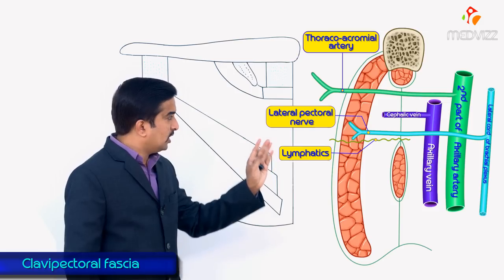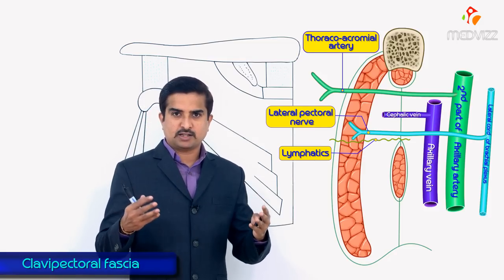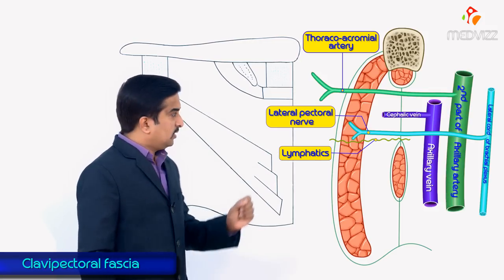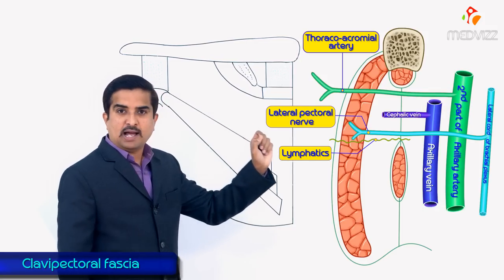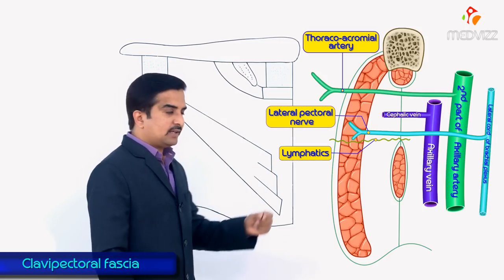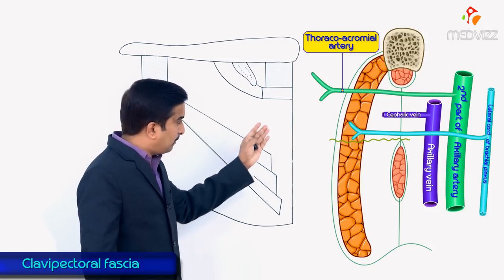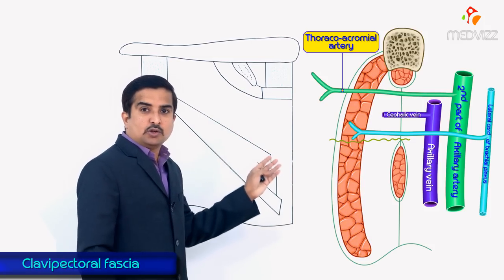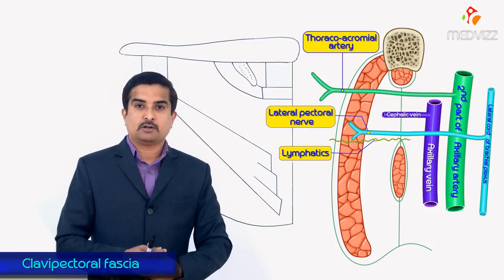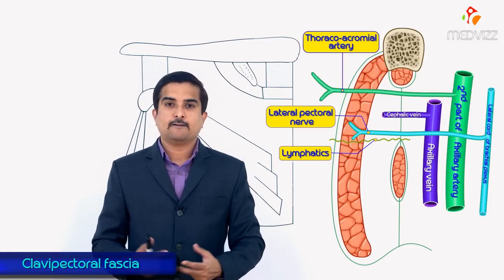To summarize, the structures piercing the clavipectoral fascia are: the thoracoacromial artery (branch of the second part of the axillary artery), the cephalic vein (drains into the axillary vein), the lateral pectoral nerve (branch of the lateral cord of the brachial plexus), and lymphatics from the breast to the apical group of axillary lymph nodes. With this, we have completed the anatomy of the clavipectoral fascia.